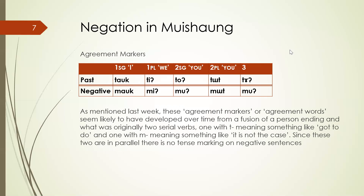Another example: Mishong Tangsa, one of the Tangsa languages. I got this information from Wang Lung Musang, who sometimes listens to these lectures. Wang Lung is living at Neotan village near Nam Pai in the Kharsang area of Changlang district, right up there in the far east. In Mishong, there is a negative system that parallels the past tense system, and we talked about agreement markers at some point in the past.